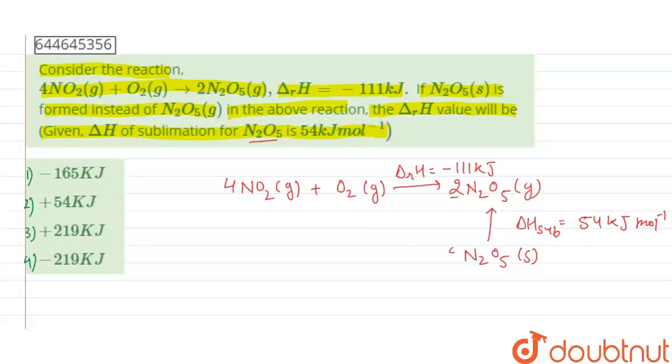So here 2 moles of N2O5 form, so here also 2 moles. Now we have to determine the heat change of this process. Let's say this is delta RH dash.